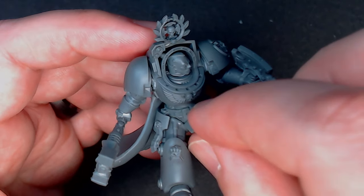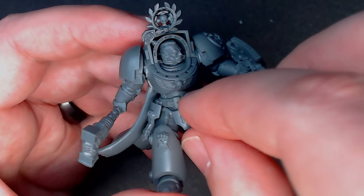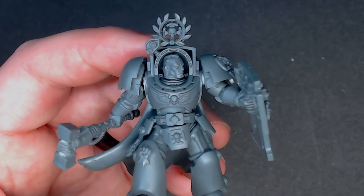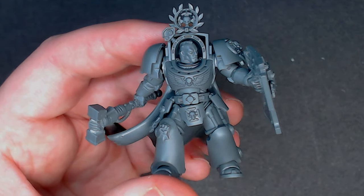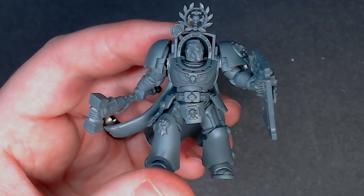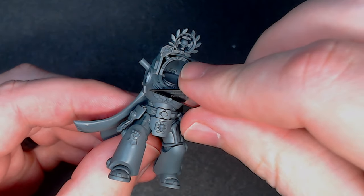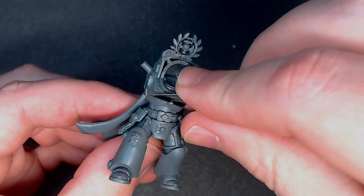For his little bit of crotch armour I nicked one of those side armour pieces, the one with the Crux Terminatus symbol on it, and literally just stuck it straight to his cod piece.